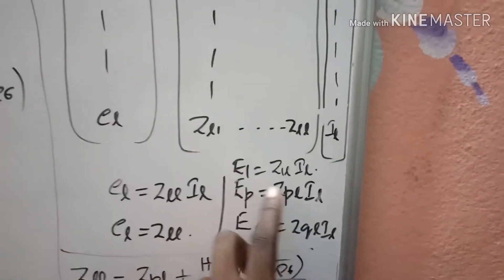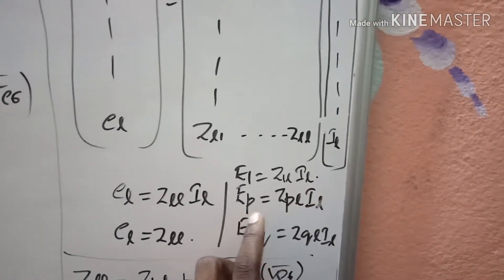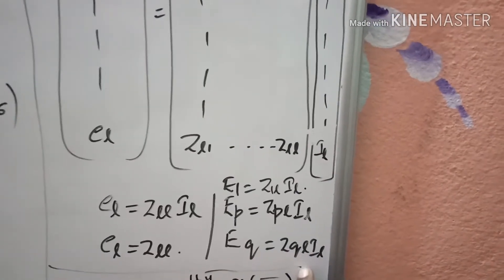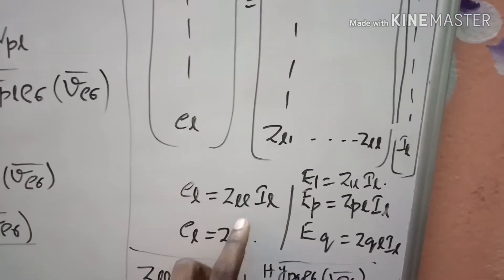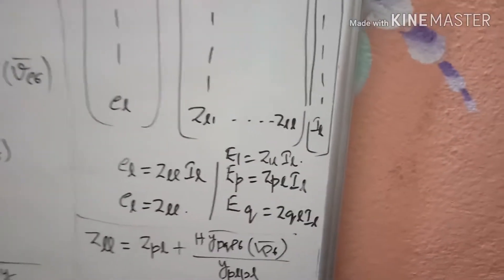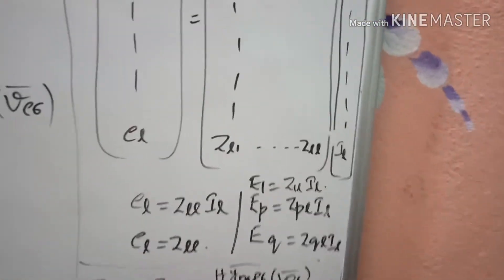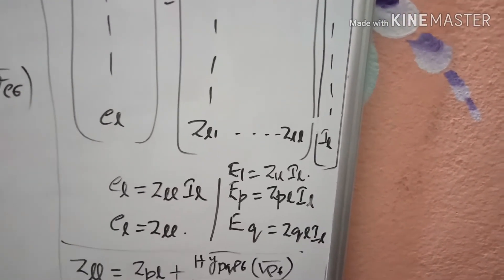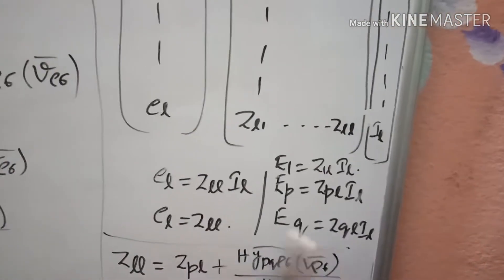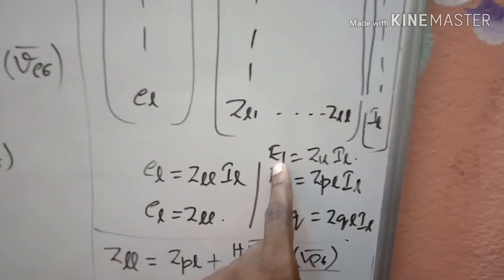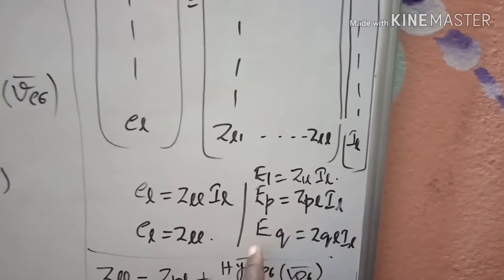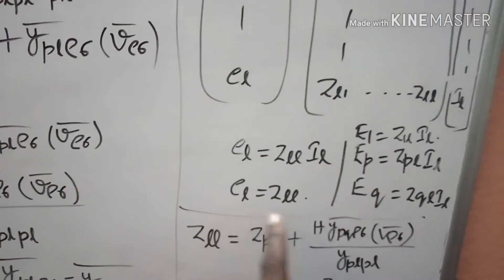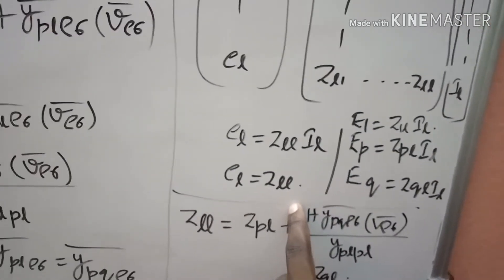I got these equations: e1 as Z_1l into il, similarly e_p as Z_pl into il, e_q as Z_ql into il, and el as Z_ll into il. I got these equations because I injected a current of one ampere only at the lth bus, making all the remaining currents as zero. When I make il equal to one ampere, I can get e1 as Z_1l, ep as Z_pl, eq as Z_ql, and el as Z_ll.